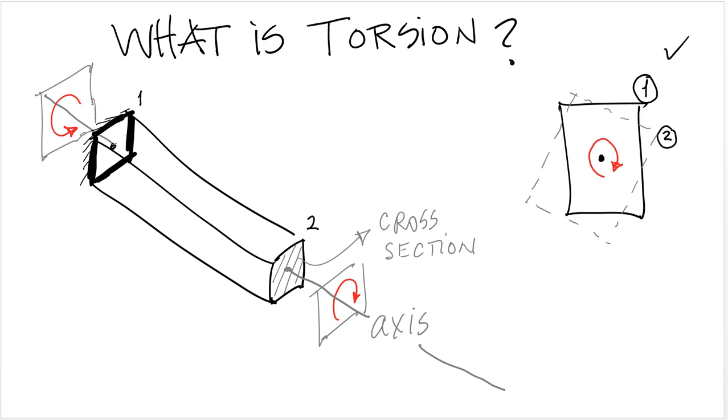And you can see that what occurs is a rotation of the cross section on its own plane. This is different than bending, where the moment is perpendicular to the cross section. In this case the moment plane is parallel.